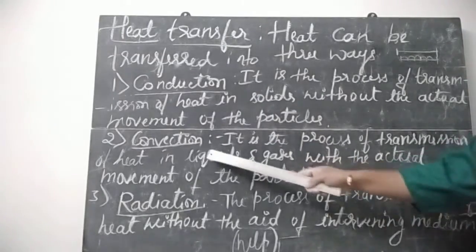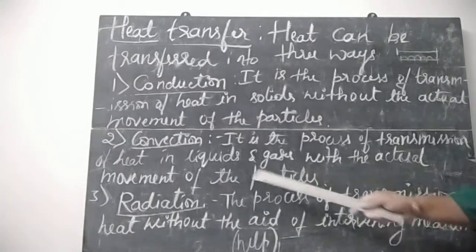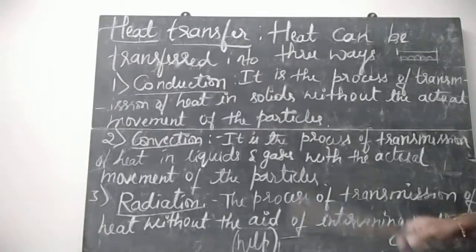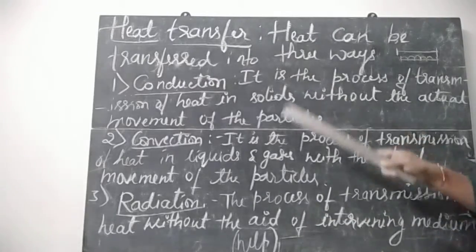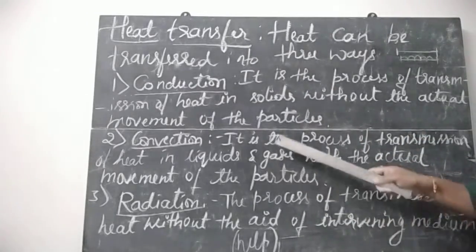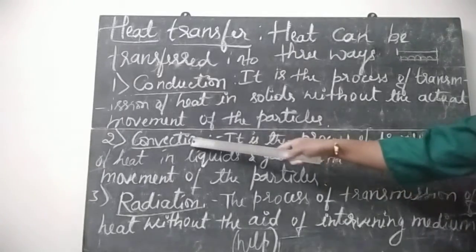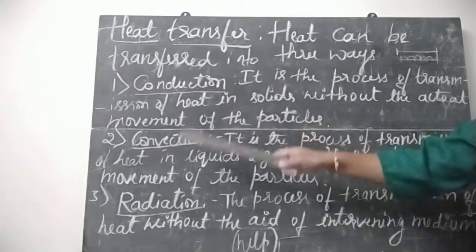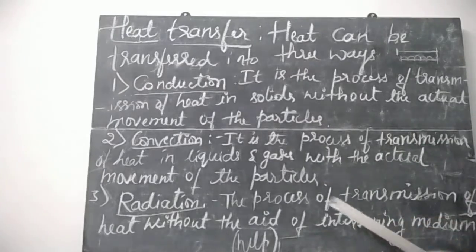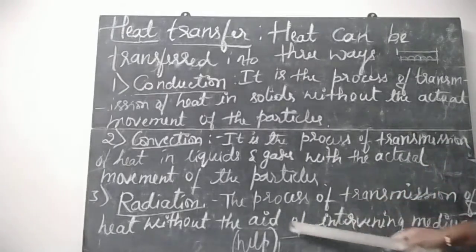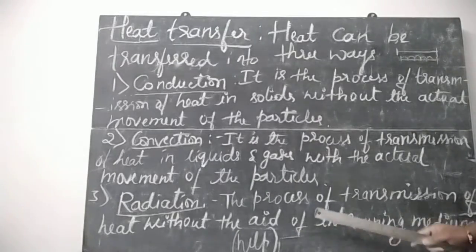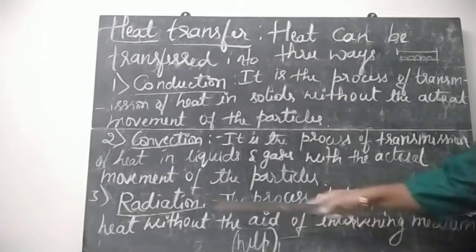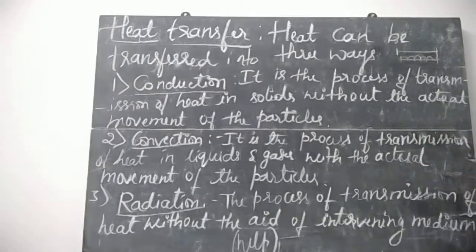In convection, heat transfer occurs in liquids and gases with the actual movement of the particles — the particles are physically moving. That process is called convection. In radiation, the process of transmission of heat occurs without the help of an intervening medium, and that is called radiation.